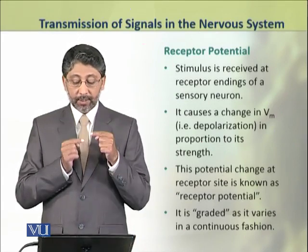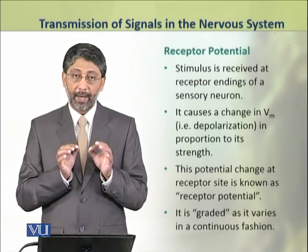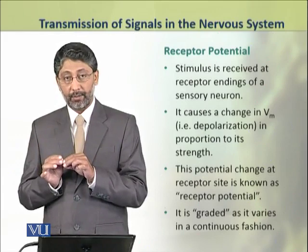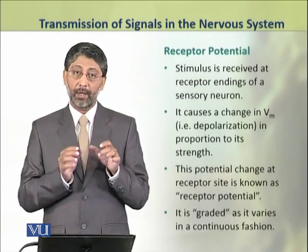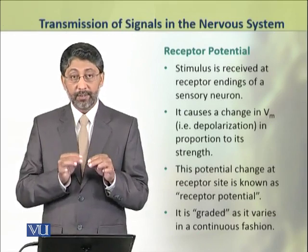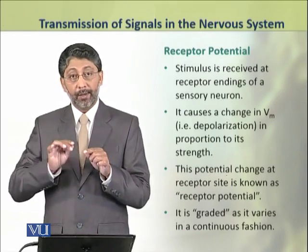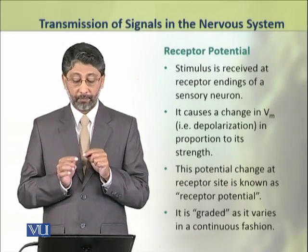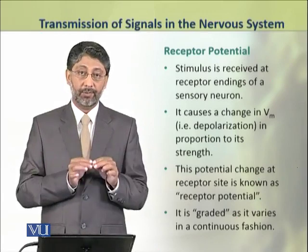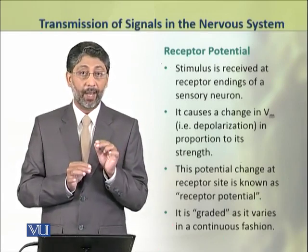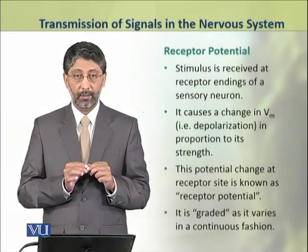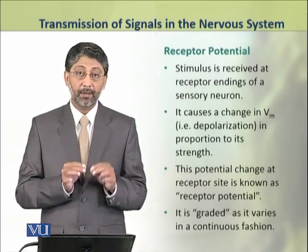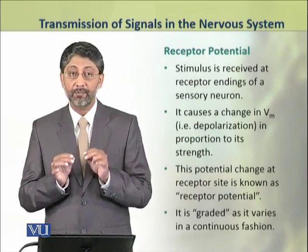When a stimulus is received at the receptor endings of the sensory neuron, a depolarization, i.e., a change in membrane potential, occurs. This change happens in proportion to the strength of the stimulus. This potential change at the receptor site is known as receptor potential, and it is a graded potential because it varies in a continuous fashion.